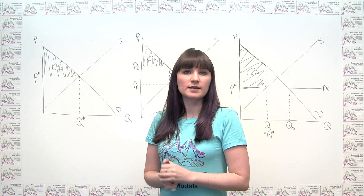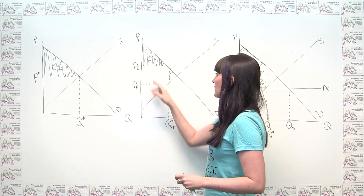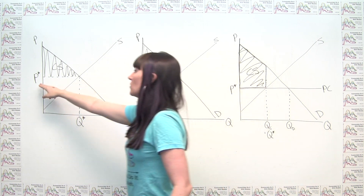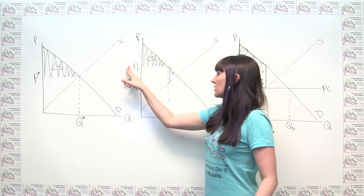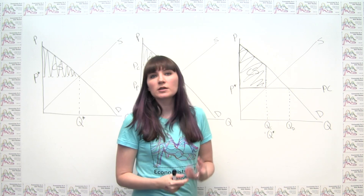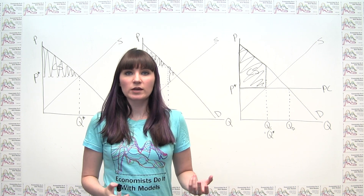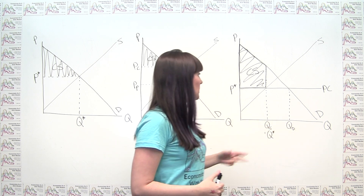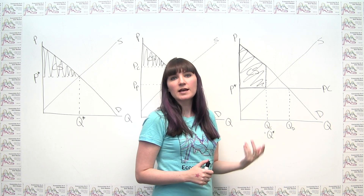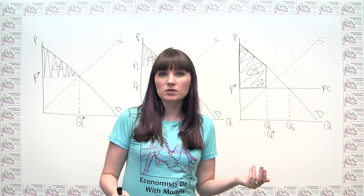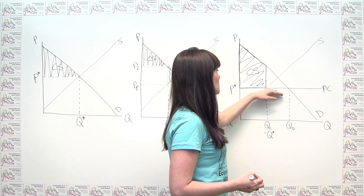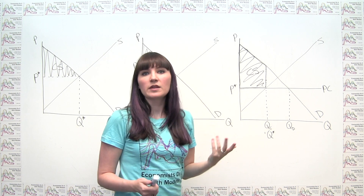Some common pitfalls in calculating consumer surplus: first, it's important to identify the price specifically relevant for the consumer, because sometimes the consumer faces a different price than the producer. Second, the quantity transacted in a market is not necessarily the same as the quantity demanded at a particular price. It takes both a buyer and a seller to make a transaction, and consumers can only get consumer surplus on units actually bought and sold. Even though a certain quantity is demanded at the ceiling price, consumers subject to a shortage are left with nothing and get no surplus.